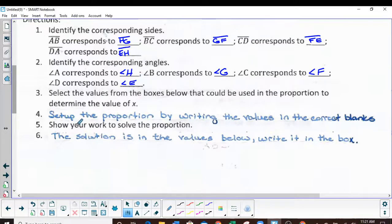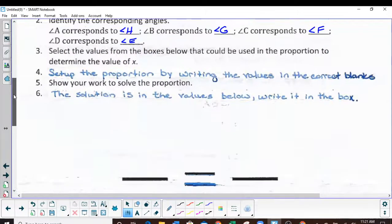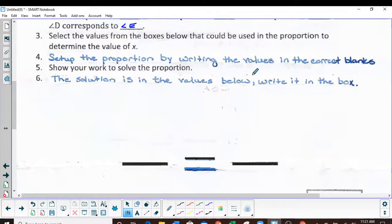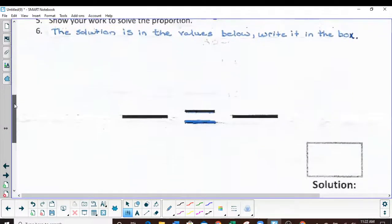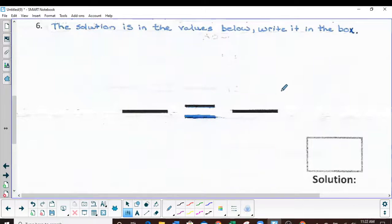Select values from the boxes below that could be used in the proportion to determine the value of X. Set up the proportion by writing the values in the correct blank. Show your work to solve the problem. The solution is in the values below, write it in the box.